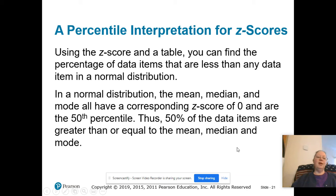Using a z-score and a table, you can find the percentage of data items that are less than any data item in a normal distribution. The z-score table gives us the percentile. In a normal distribution, the mean, median, and mode all have corresponding z-scores of zero and are the 50th percentile. That means 50% of the data items are greater than or equal to the mean, median, and mode, and 50% are less than.